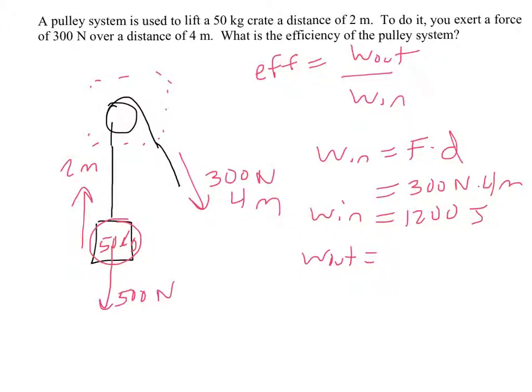So in order to lift this, 500 newtons must be pulling up on the crate to lift it, and it is lifted a distance of 2 meters. So the work-out is 500 newtons times 2 meters, or 1,000 joules.